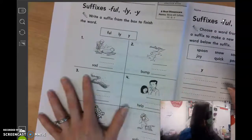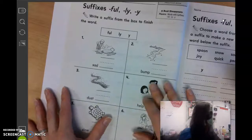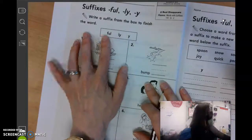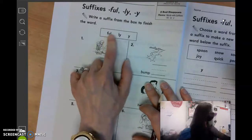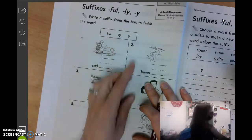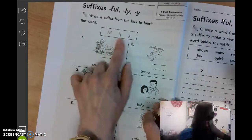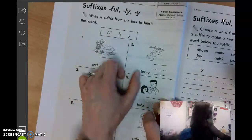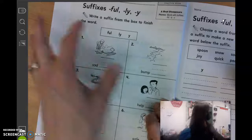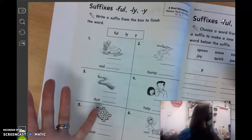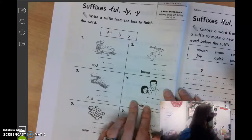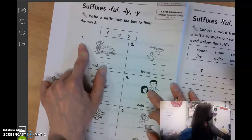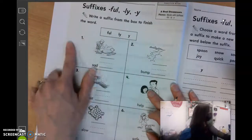Suffixes. So almost all of your spelling words have a suffix, which is an ending on the word, like F-U-L, L-Y, and Y. Like sadly, L-Y is a suffix at the end of the word. It's letters that are added to the end of a word, so they kind of change it. So it says to write a suffix from the box to finish the word.